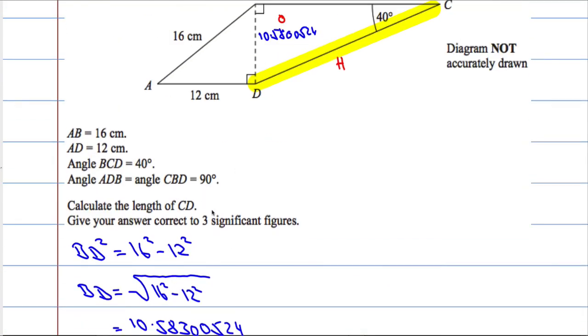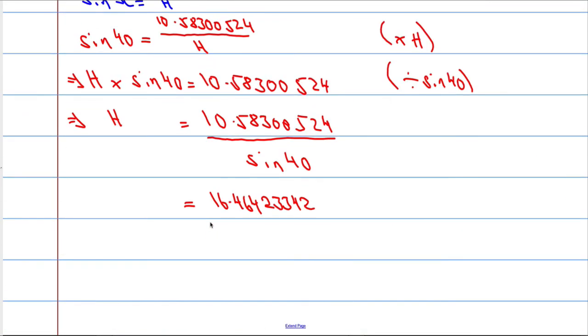And we want to give our answer correct to three significant figures. To three significant figures, we go to the third digit, provided that the first digit is not zero. One, two, three. Essentially, I'm rounding to the same as one decimal place in this case. So, it's going to be 16.5.